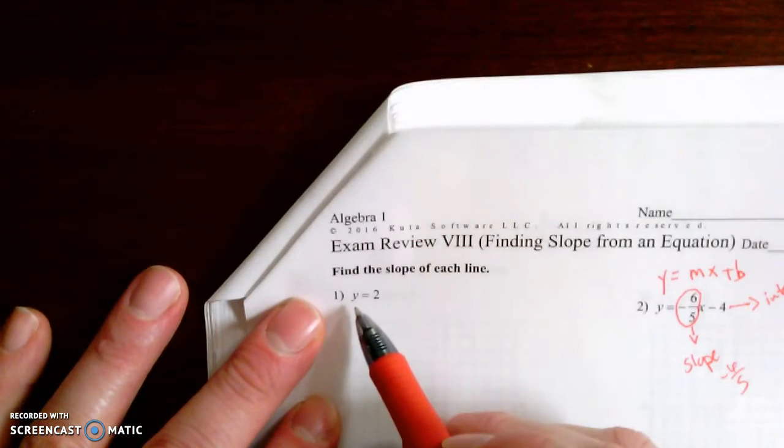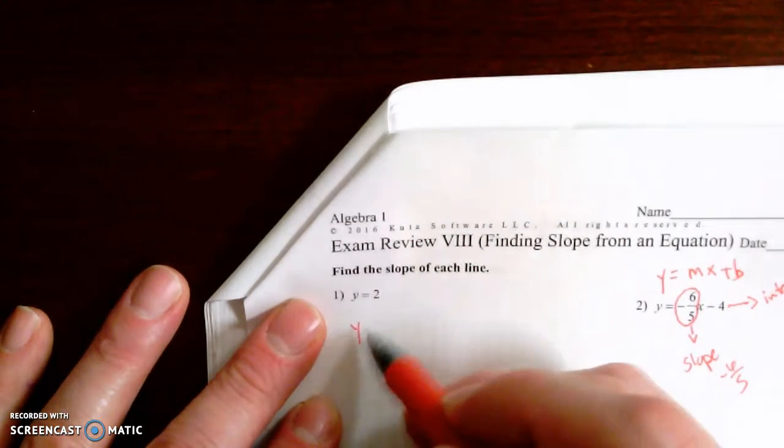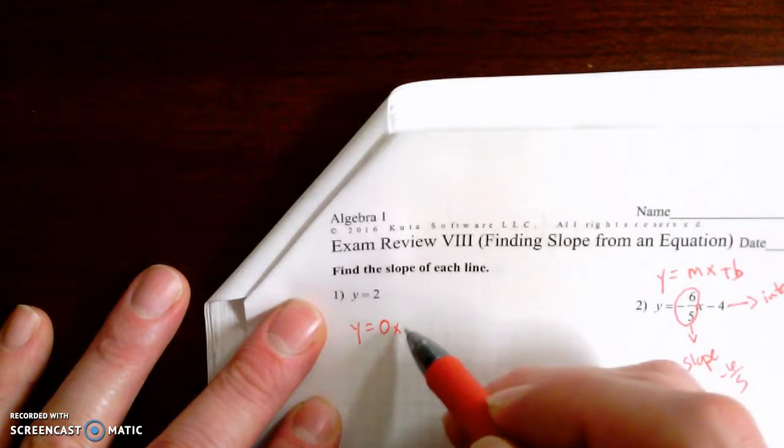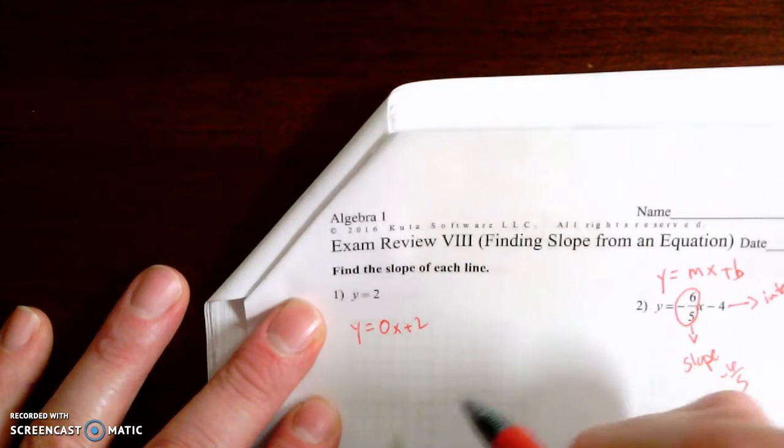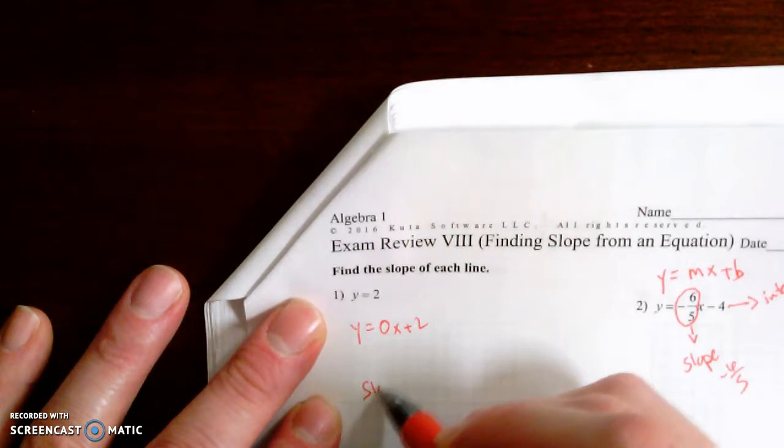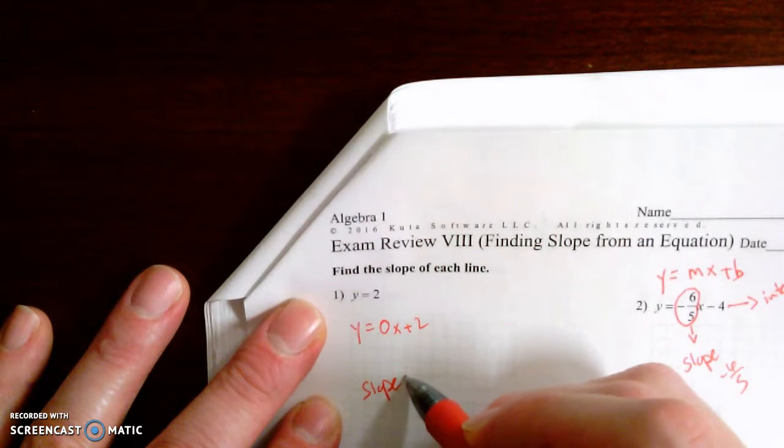Two things you have to watch out for. Up here, if you just have an equation that's y equals, this is like y equals 0x plus 2. They just won't put in the 0x because it's 0. So the slope here is 0.